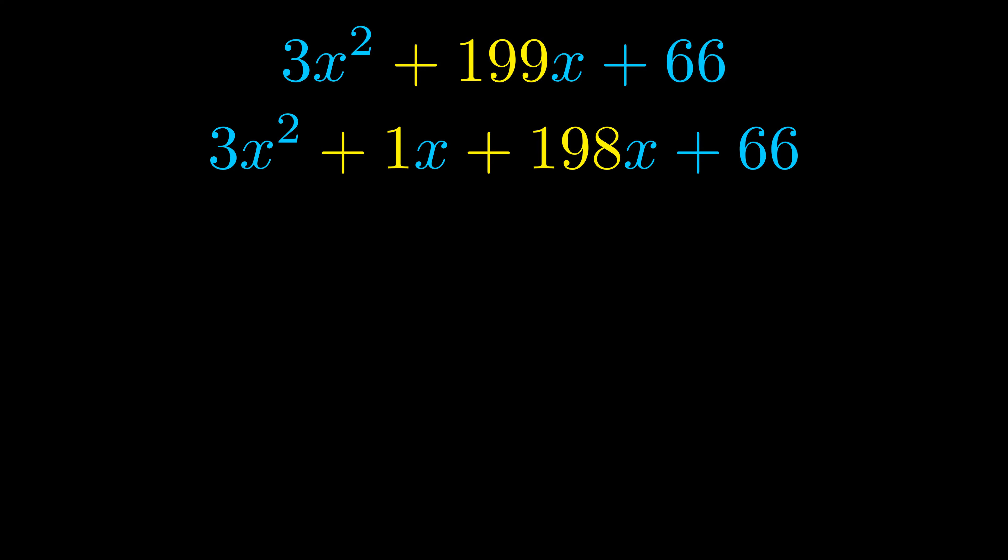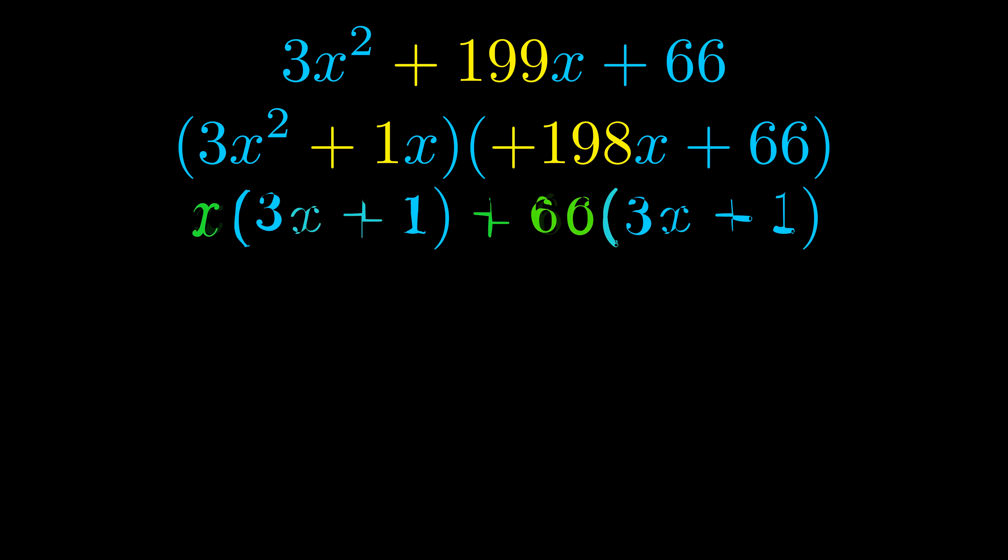Once we've done this we put parentheses around the first term and the last term, and we do that so that we can take the greatest common factor out of both terms. We can see the greatest common factor is now outside in green.